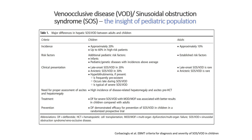In summary, in the pediatric population we have higher incidence, additional pediatric risk factors, and a different clinical presentation with late-onset and anicteric VOD in 20–30% respectively. Defibrotide for severe SOS in pediatric patients was associated with much better results than in adults. For prevention, defibrotide also demonstrated efficacy in a randomized prospective trial in pediatric patients; however, this prophylaxis is not yet registered.